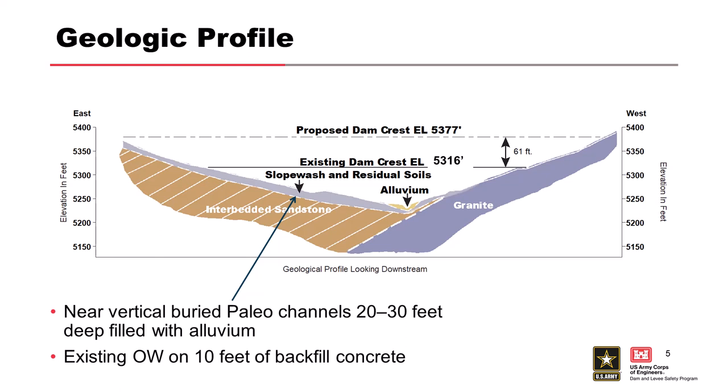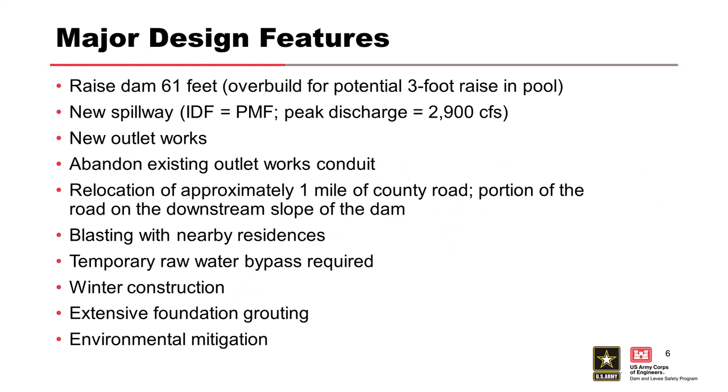The geologic profile across the valley showed sandstone on one side, unconformably over hard granite on the right side — left and right looking downstream. The outlet and spillway were in the sandstone, and there were paleo channels cut into it 20 to 30 feet deep. When the existing outlet was installed, up to 10 feet of backfill concrete was needed due to those paleo channels. For these reasons, the new spillway and outlet were placed on the right abutment in the granite.